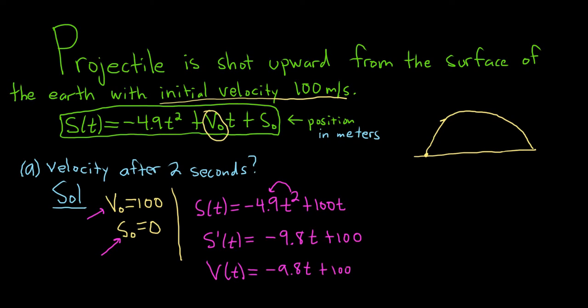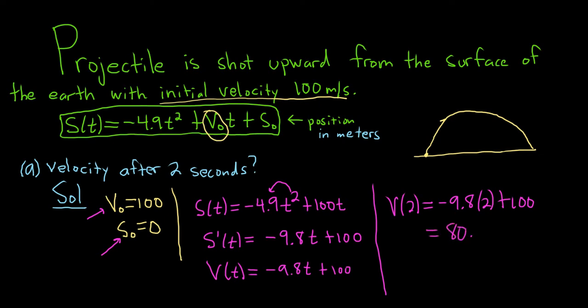Now we plug in 2. V(2) is negative 9.8 times 2 plus 100. Using a calculator: negative 9.8 times 2 plus 100 gives 80.4 meters per second. That's the velocity after 2 seconds.